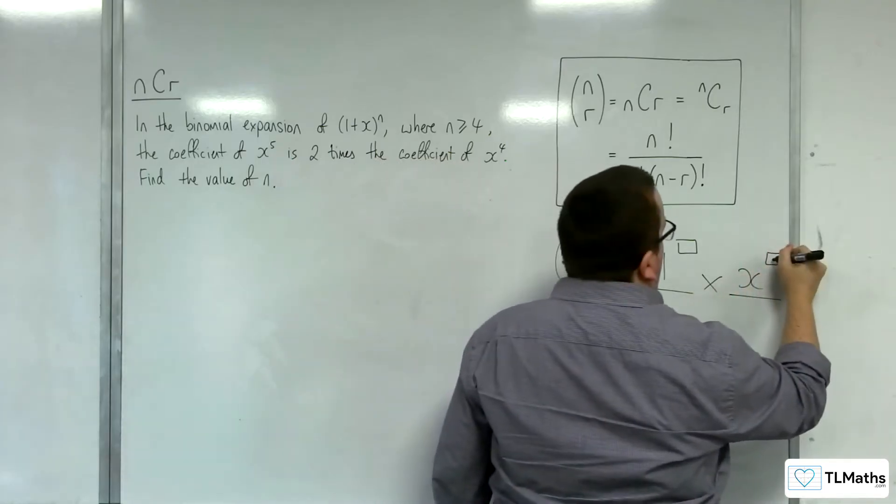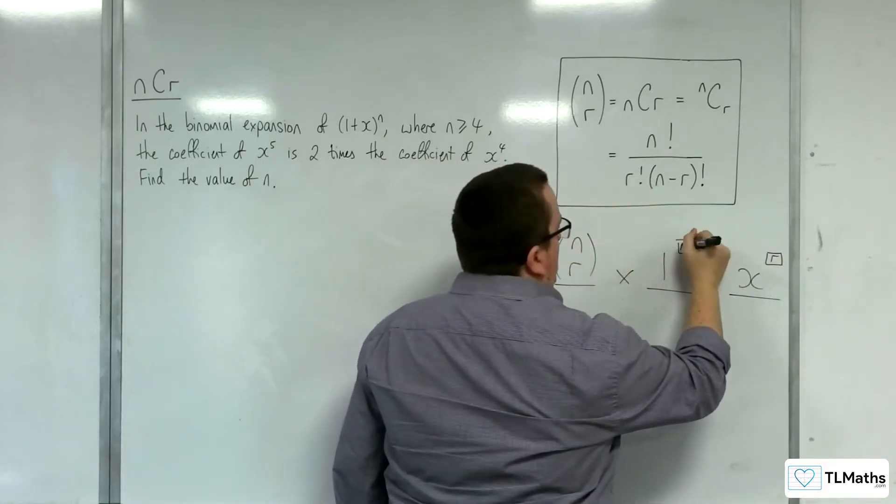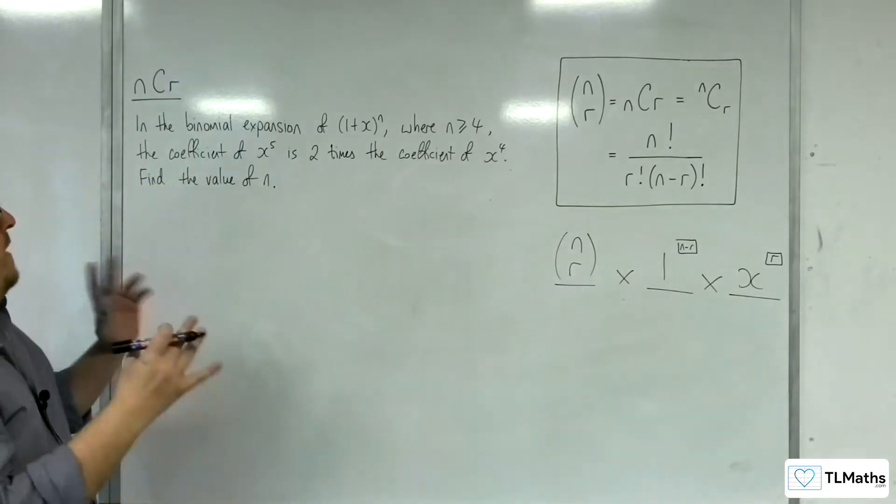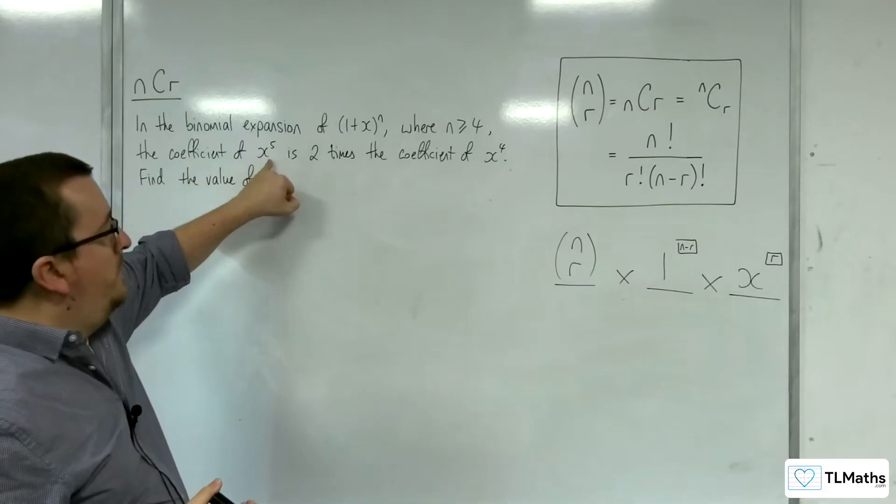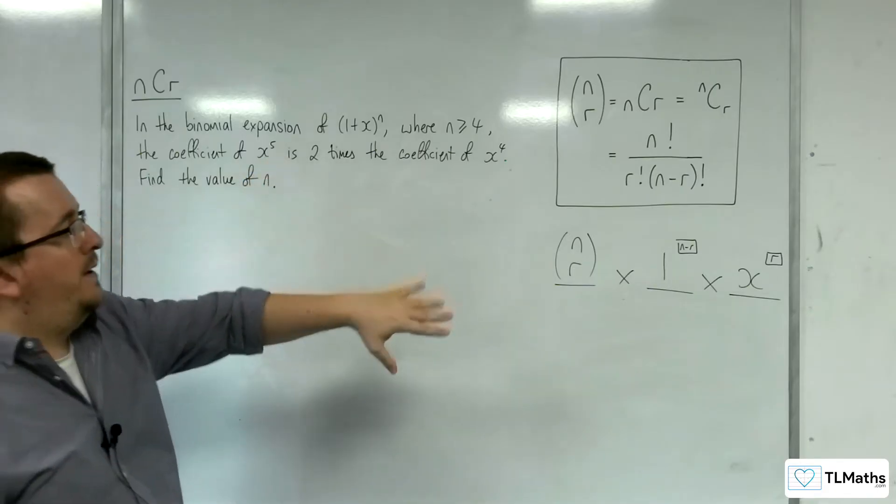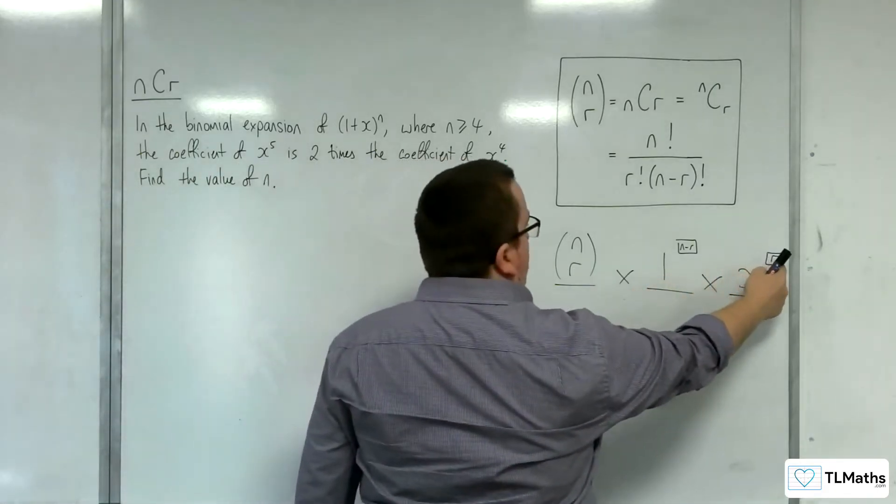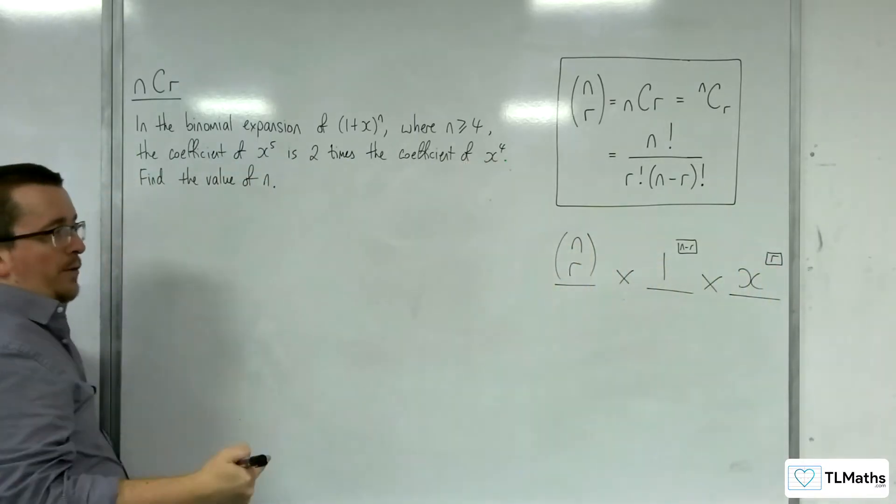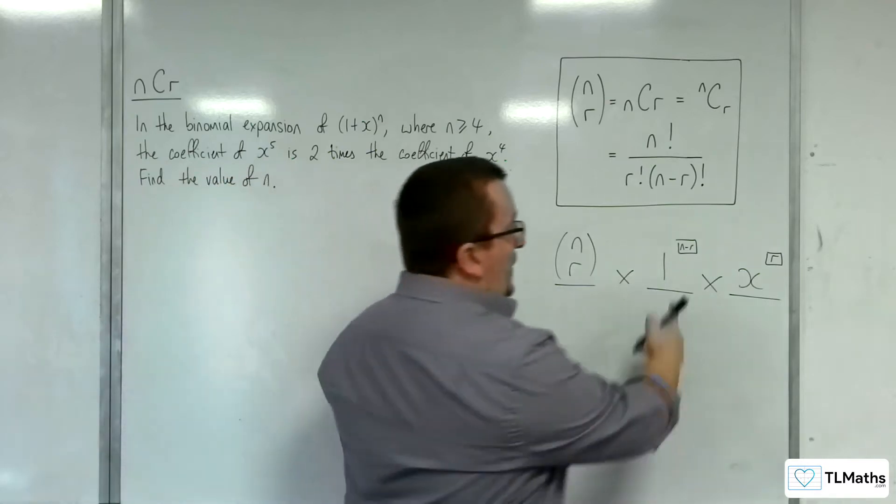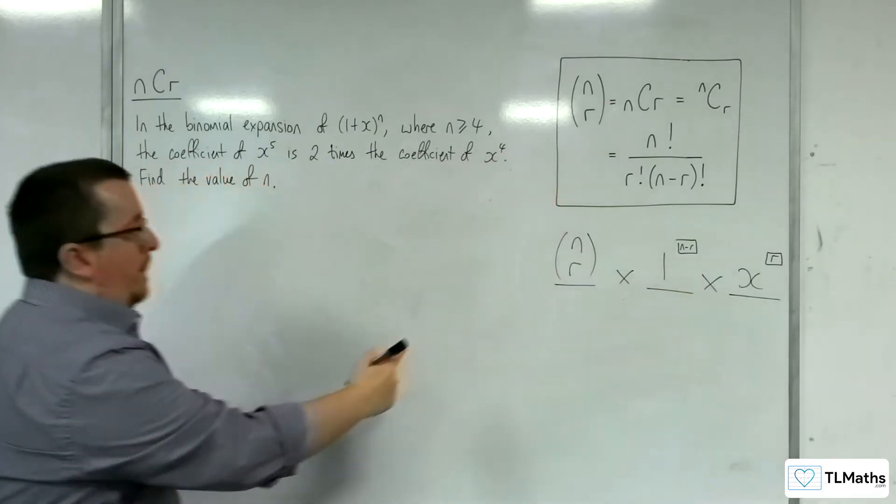And so this is r, this could be n minus r. So then, if the coefficient of x to the 5, we want the coefficient of x to the 5 here, so r would have to be 5, and so this would be n choose 5. That would be the coefficient of x to the 5, because that's just going to be 1.